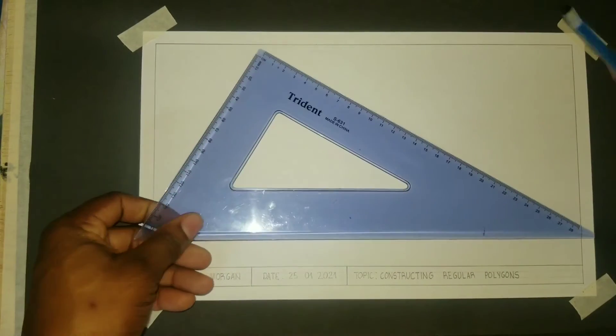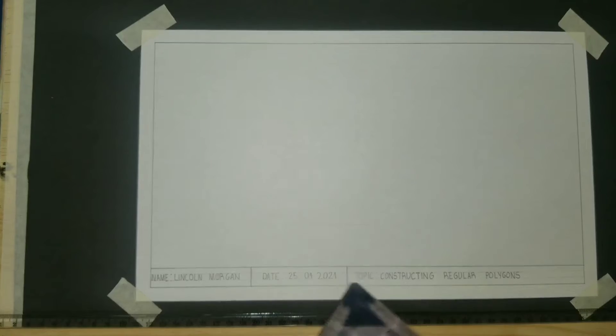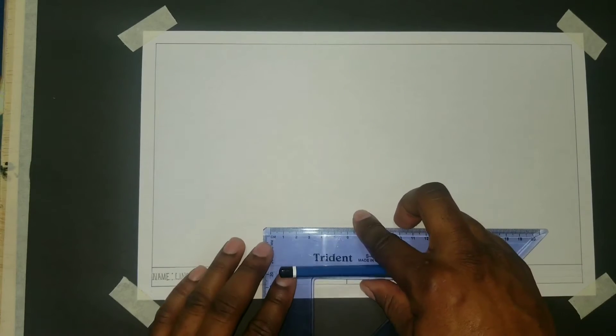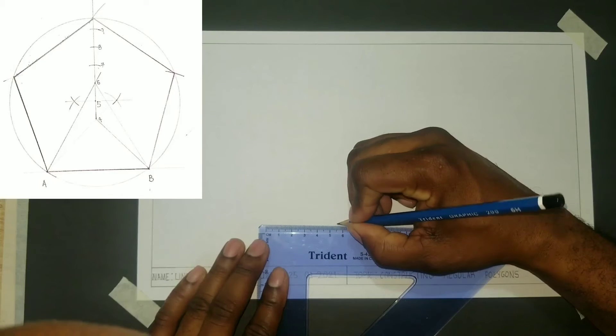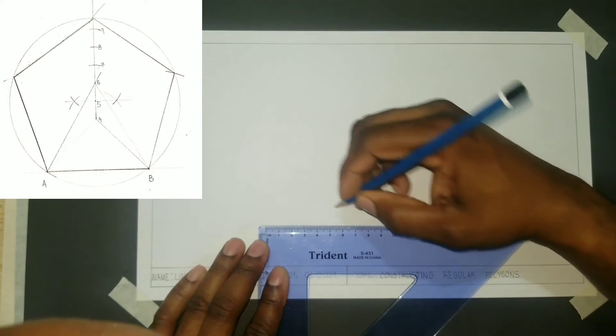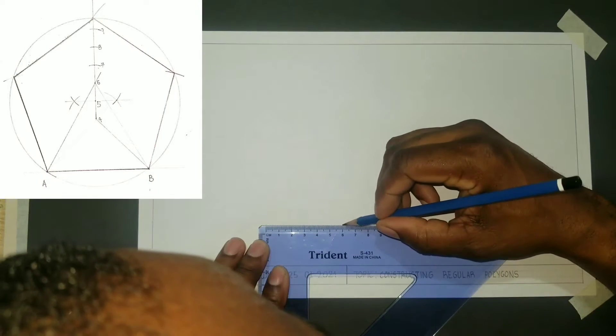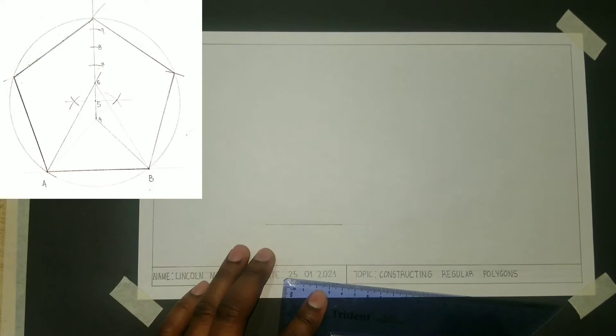I will now draw the first side of my polygon, which is a pentagon, to measure 60 millimeters. I will outline my 60 millimeters on this line and label the line AB.